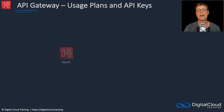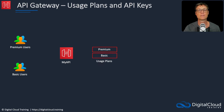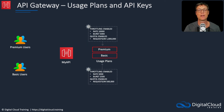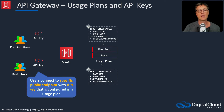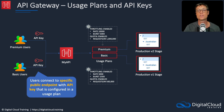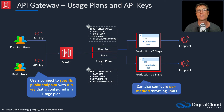Lastly, we have usage plans and API keys. If you have basic users on a lower plan and premium users who should get a better service, you create two usage plans — premium and basic. The premium plan gets higher performance with higher throttling thresholds. API keys are added to requests submitted to the public endpoint, allowing you to differentiate between basic and premium users. Those users can then be connected to different stages and even different endpoints. You can also configure per-method throttling limits on each stage.